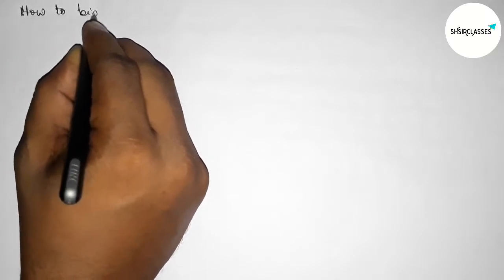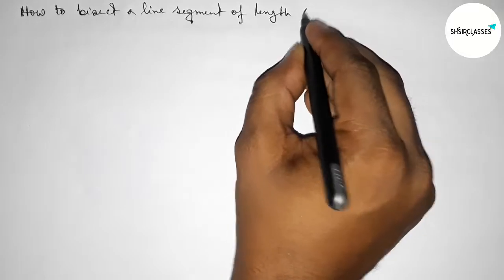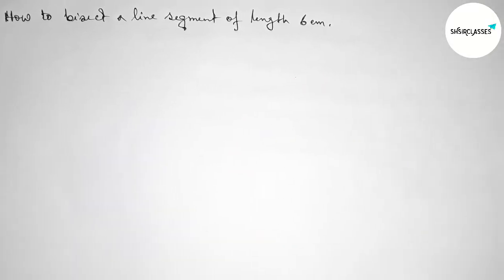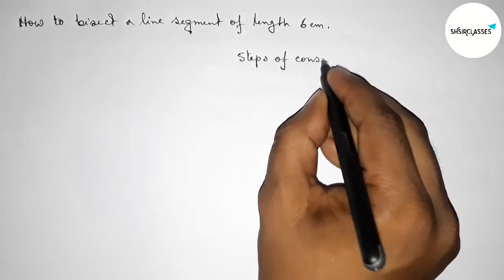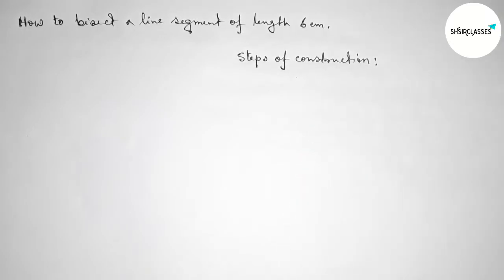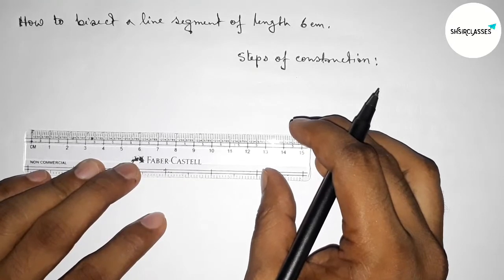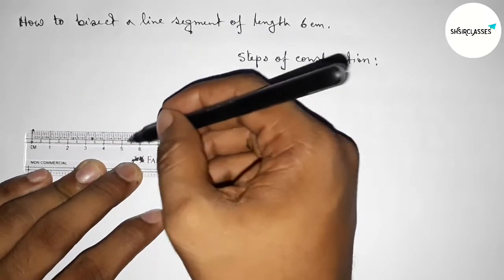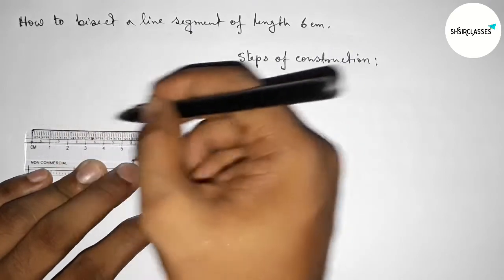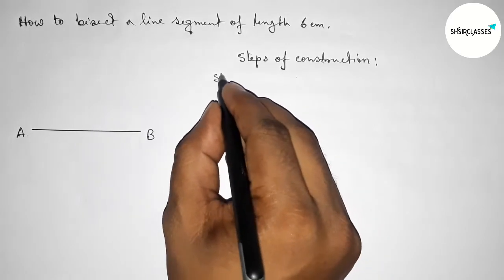Hi everyone, welcome to SI Share Classes. Today in this video we're discussing how to bisect a line segment of length 6 centimeters using a compass, in an easy way. Let's start the video. First, leaving some space to write down the steps of construction. We have to draw a line of length 6 centimeters using a scale: 0, 1, 2, 3, 4, 5, 6. Drawing a line of length 6 centimeters and taking points A and B. Step number one.